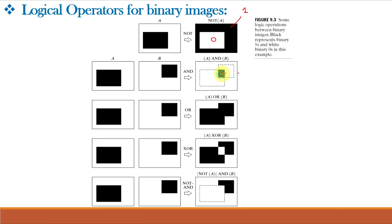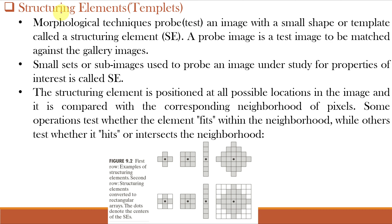A OR B is the addition of all the elements of A and B. A XOR B. And the last one is NOT A AND B — NOT of A is all the portion outside A, and that is ANDed with B. The important elements for morphological image processing are the structuring elements, which are also called templates.